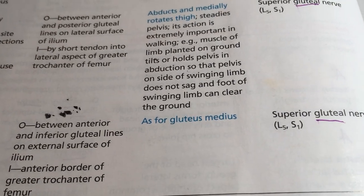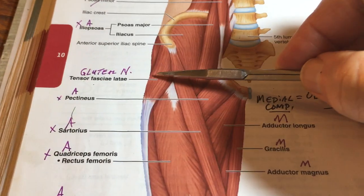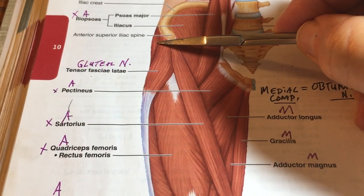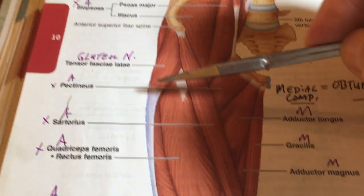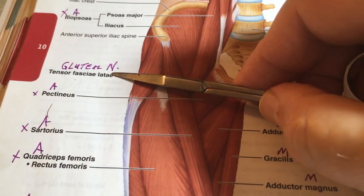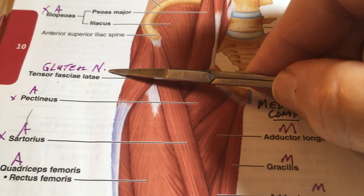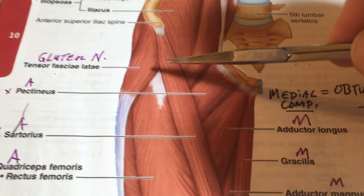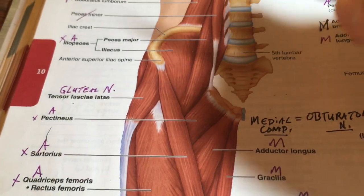Completing the gluteal nerve group: tensor fascia lata is also innervated by the gluteal nerve. It comes down the side slightly to the front and inserts into the iliotibial tract. So the four muscles innervated by the gluteal nerve are gluteus maximus, gluteus medius, gluteus minimus, and tensor fascia lata — and that completes the gluteal nerve outflow to muscles.